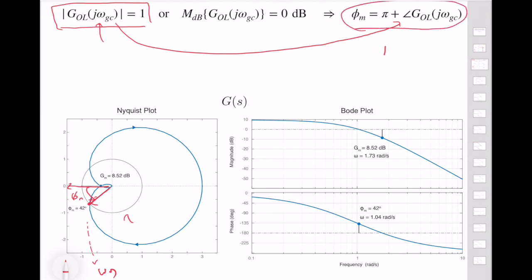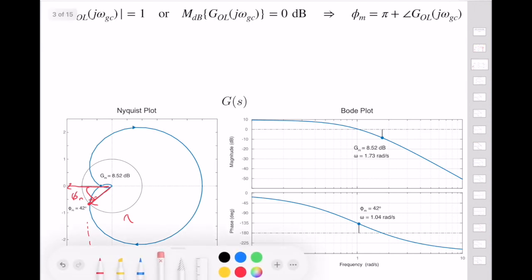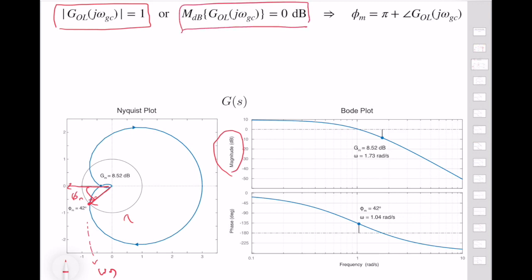How can we do the same operation on the Bode plot? What we need to do is find when our magnitude is crossing one. Since our magnitude is in decibel units, we look at when the magnitude in dB crosses the 0 dB line. I draw a line at the 0 dB scale — I then find the frequency or point where the magnitude plot crosses this line. I have now computed my gain crossover frequency.